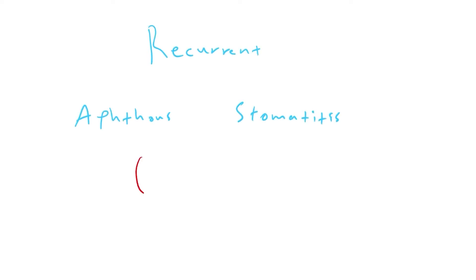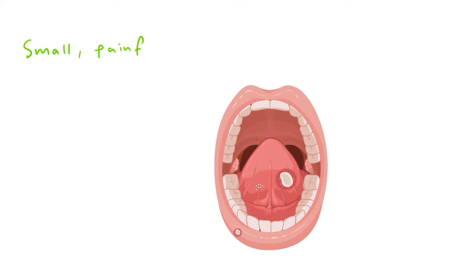Recurrent aphthous stomatitis, or RAS, is a common oral condition characterized by the repeated appearance of small, painful ulcers on the mucous membranes inside the mouth, including the tongue, cheeks, and lips.